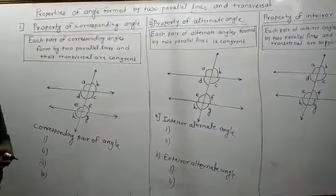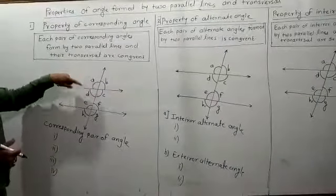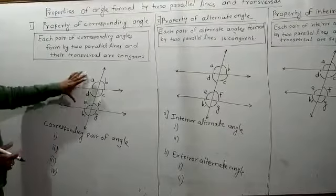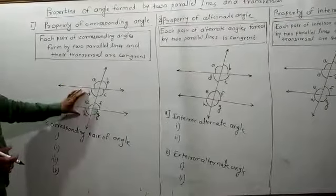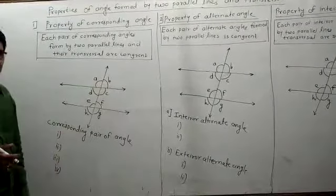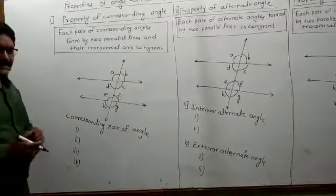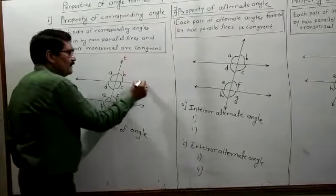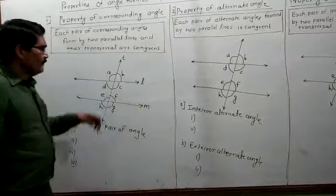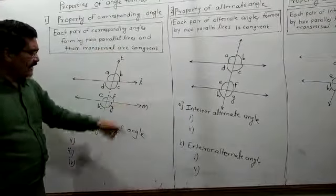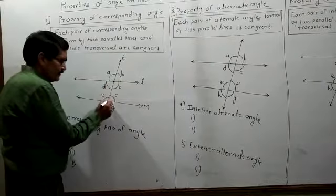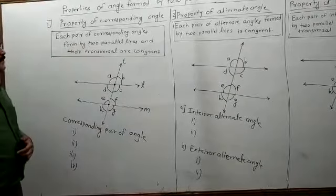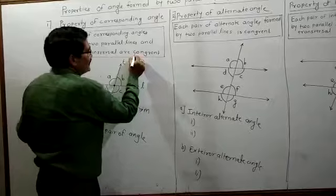Which are the corresponding angles? Angle A and angle E, angle D and angle H, angle B and angle F, angle C and angle G. But what is the relation between them? If these are the corresponding angles, then transversal T intersects line L and line M in two distinct points. Whatever corresponding angles are formed, the property is that the corresponding angles are congruent.